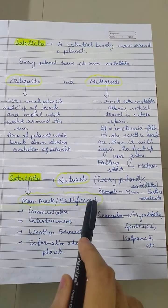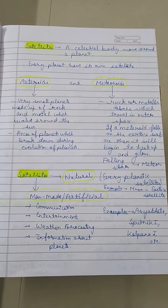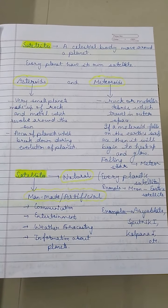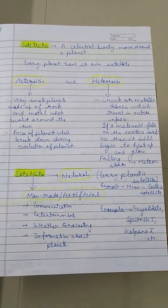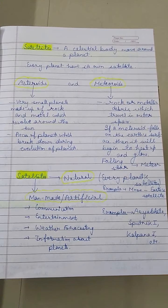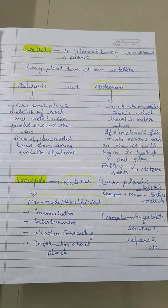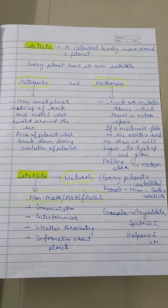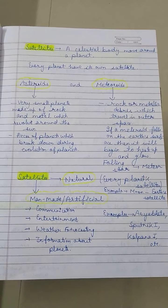Now, man-made or artificial satellites. There are some satellites which are made by human beings for different purposes. Here I mentioned some of the things for which we need artificial satellites. Firstly, for communication — to communicate or to connect with different people around the globe. There are some communication satellites through which we can connect to everyone. Then, for entertainment purposes, as we have seen news and TV channels from all over the world. Through these satellites we are able to get that information or entertainment.